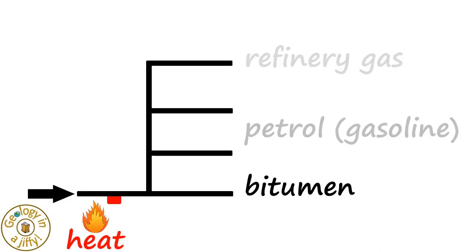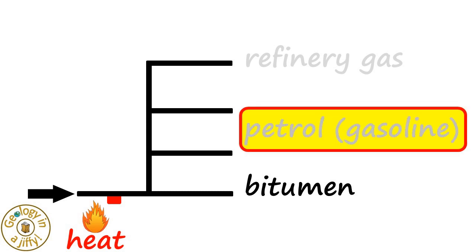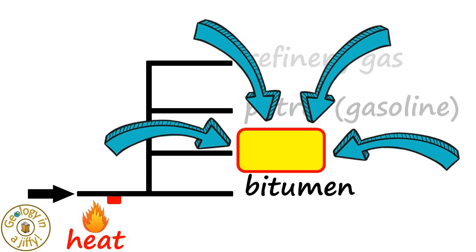So in our model Jiffy, using our knowledge of the different fractions, petrol, or gasoline, located here, can be moved upwards, to here. And at this location, we can extract diesel.